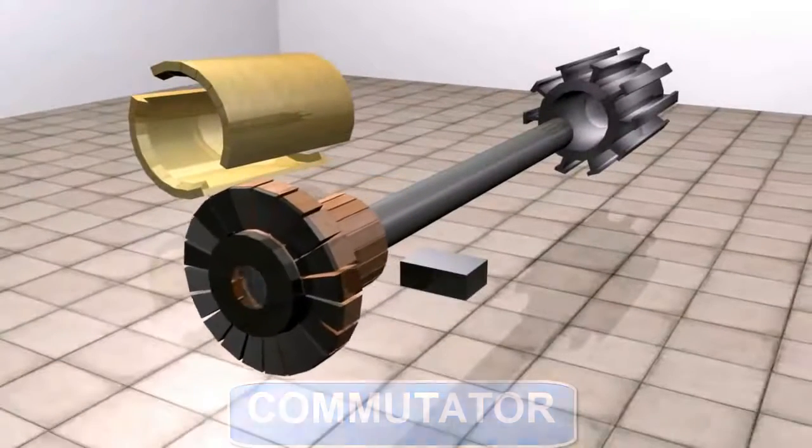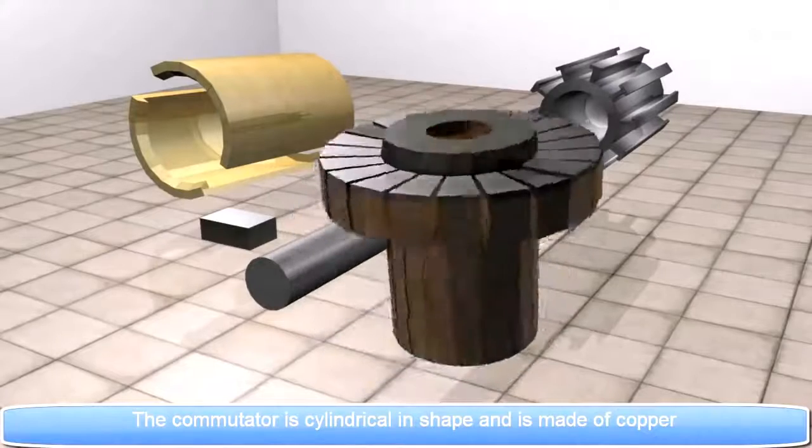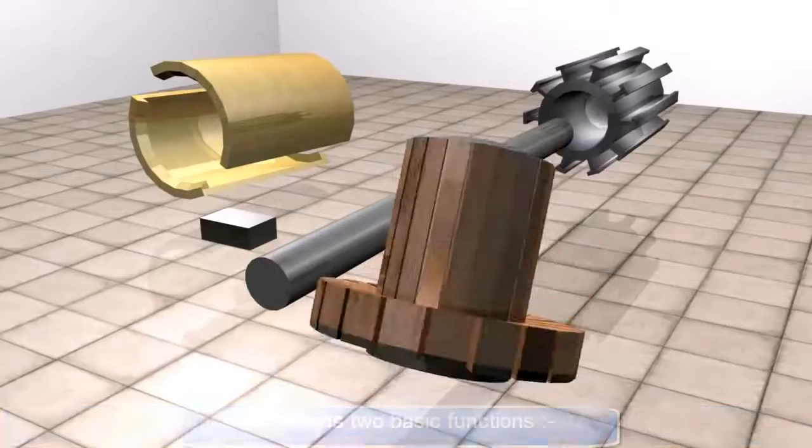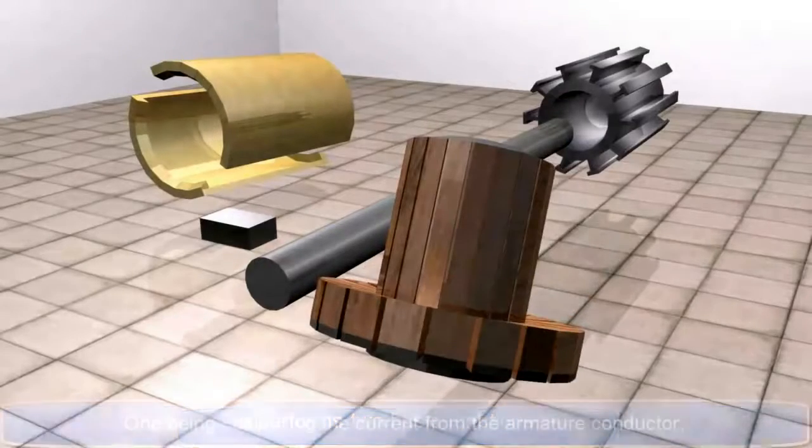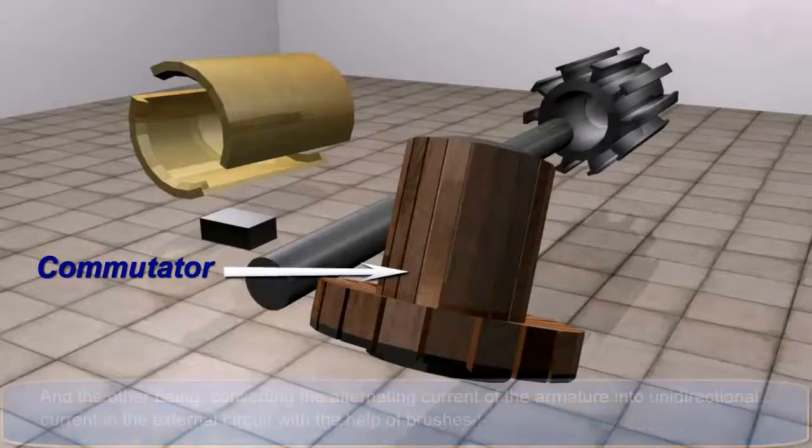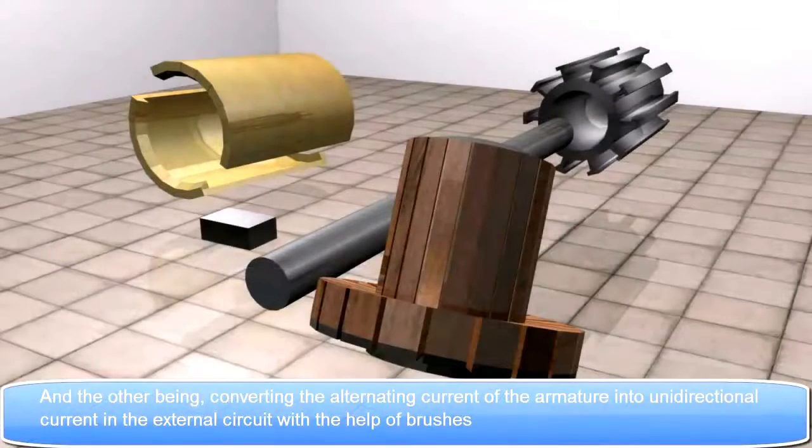Commutator: The commutator is cylindrical in shape and is made of copper. It performs two basic functions: one being collecting the current from the armature conductor, and the other being converting the alternating current of the armature into the unidirectional current in the external circuit with the help of brushes.